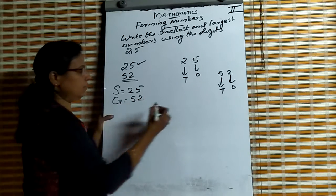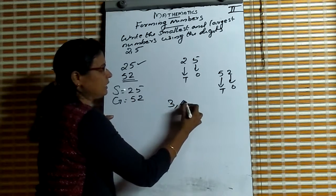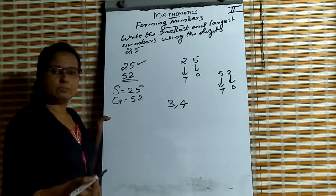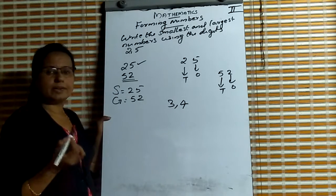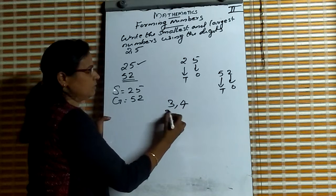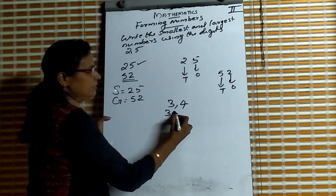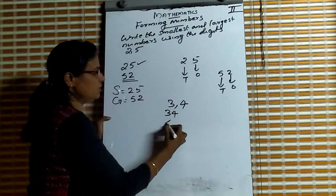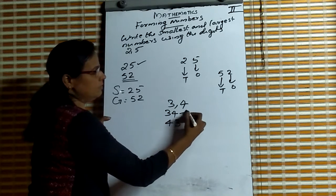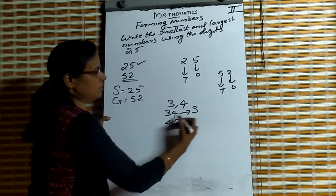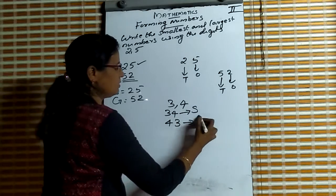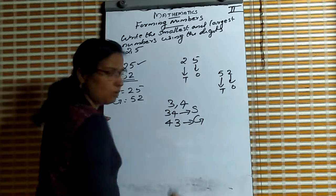Then take 3 and 4. Using 3 and 4, write the smallest and greatest number. First one: 34. Next: 43. Here, smallest number is 34 and greatest number is 43.